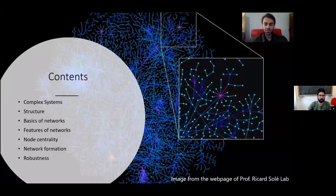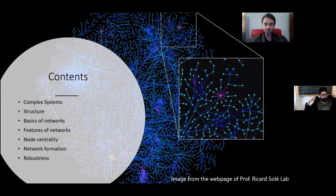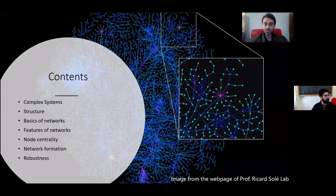Let's go into the details of this talk. First, I'll talk about complex systems — they are everywhere around you, and you just need to learn how to identify them and characterize them by their important properties. Then we'll move to discuss the structure of these systems, and after that we'll cover the basics of networks, because we model the structure of these systems as networks.